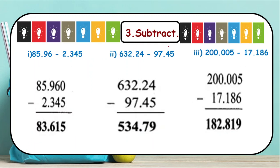Then next is subtract. Even for subtraction we need to do the same thing — arrange the decimals one below the other, that is the first care to take. Second, the bigger number should always be written on top, just as we do in normal subtractions.